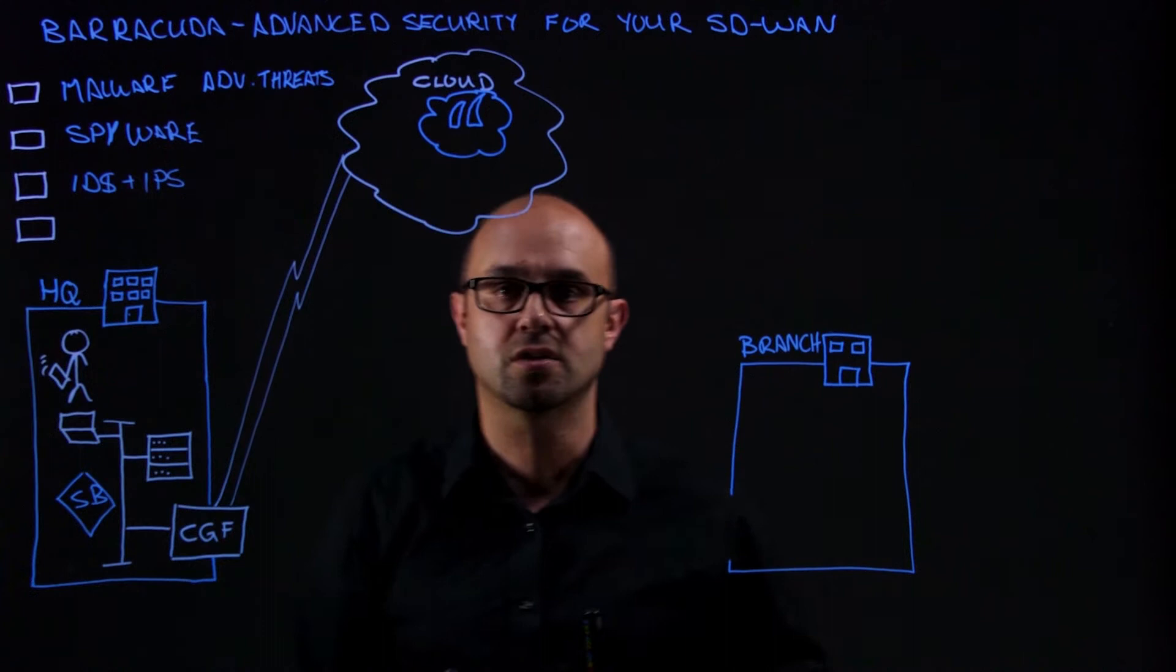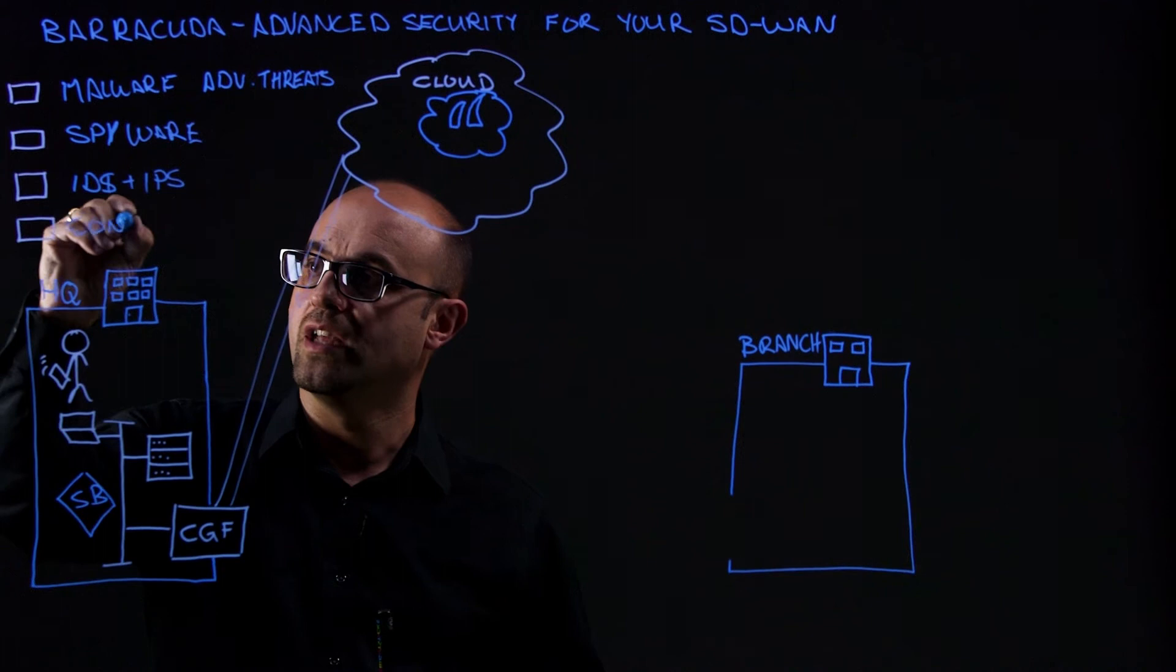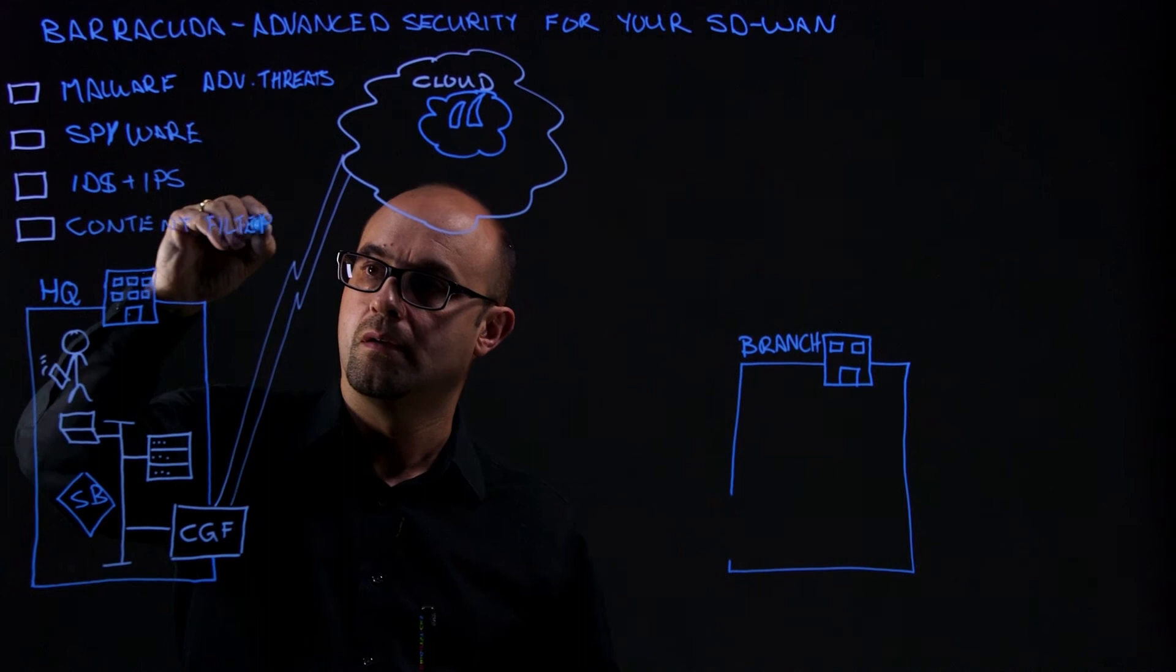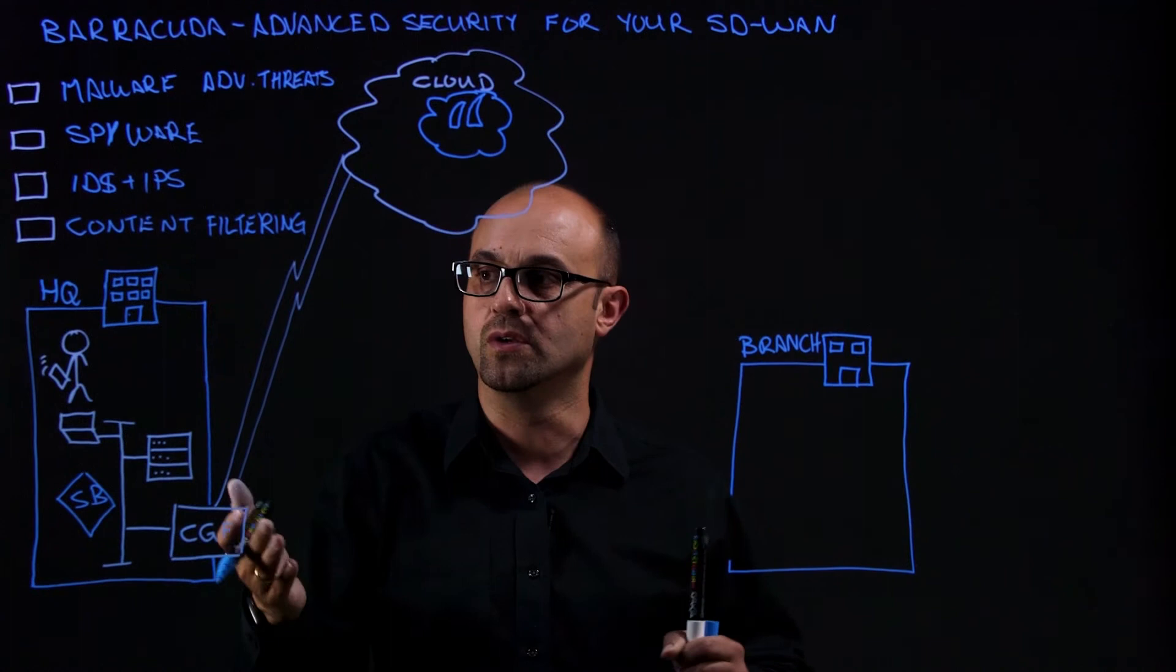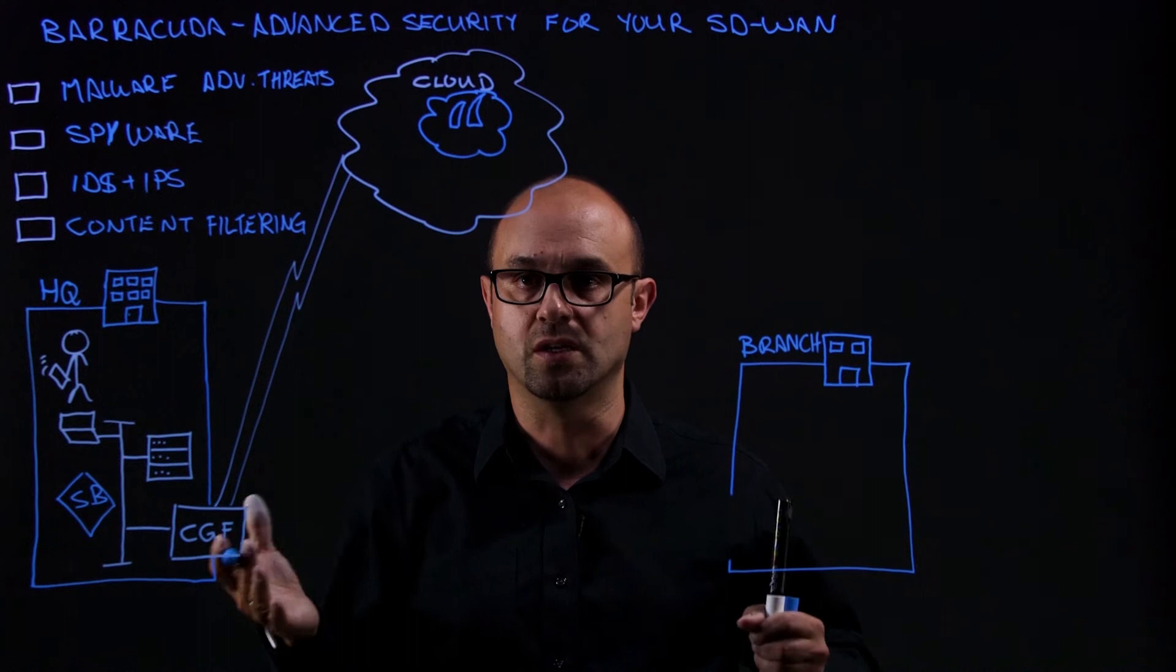And then finally, of course, content filtering. This is, again, another device that sits in line that stops users going to non-business critical sites such as Facebook, perhaps, or YouTube, Spotify, whatever your policy is. And it might also filter out key content words as well, such as terrorism, bullying, depending on what you do. You might be a school, for example.